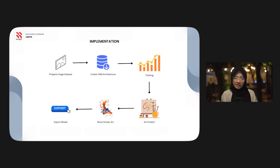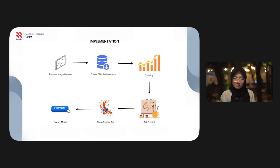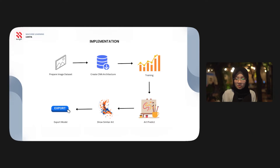The third stage is training with the convolutional neural network model we built. In the future, we will continue to develop the model and improve its accuracy. The fourth stage is art movement prediction — to test the model, we run art movement prediction. After uploading an art image, the prediction results appear along with a description of the art movement.